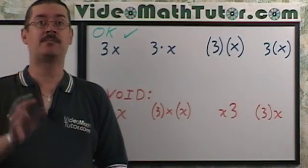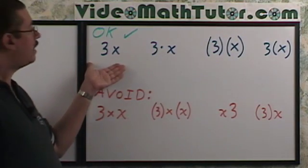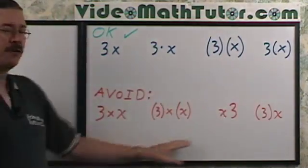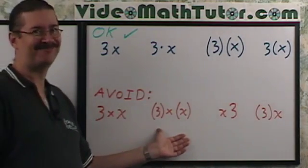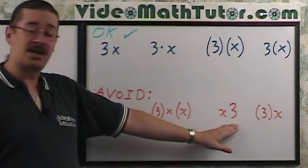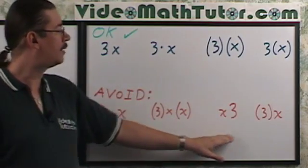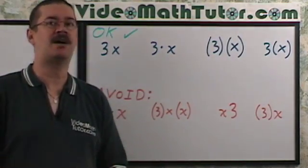To further illustrate our point, let's take a look at this. We can have things that are okay: implied multiplication, the raised dot, or parentheses. Try to avoid things that look like this. Again, the times sign with the x's. The constant should not be to the right. It should be to the left, traditionally, when you're multiplying. And parentheses around just the constant just doesn't look good. Traditionally, it's just not done.